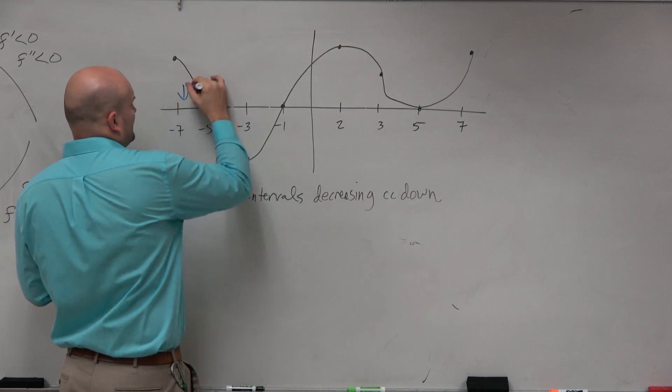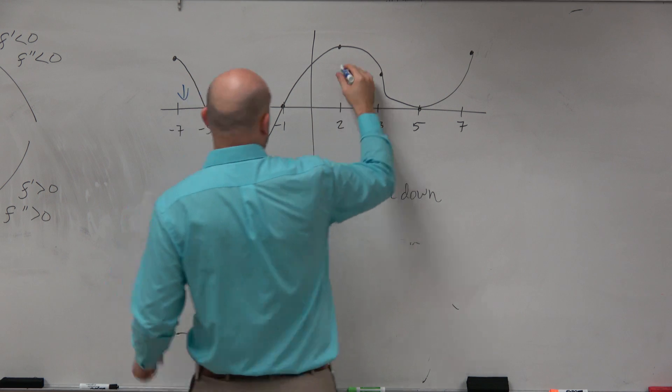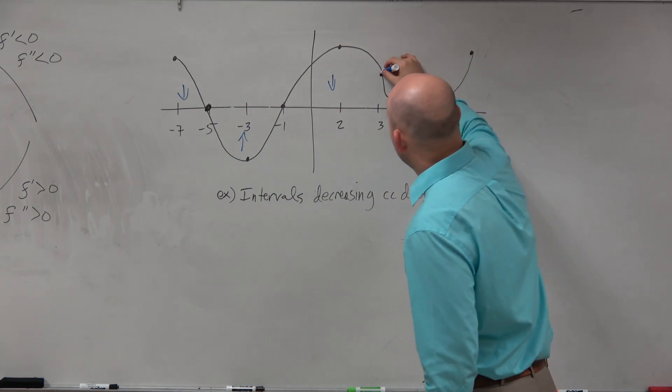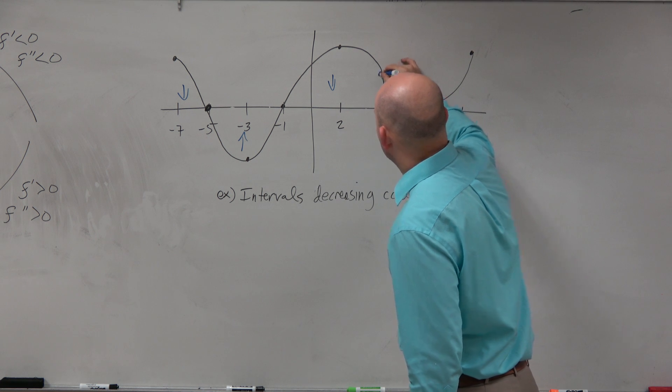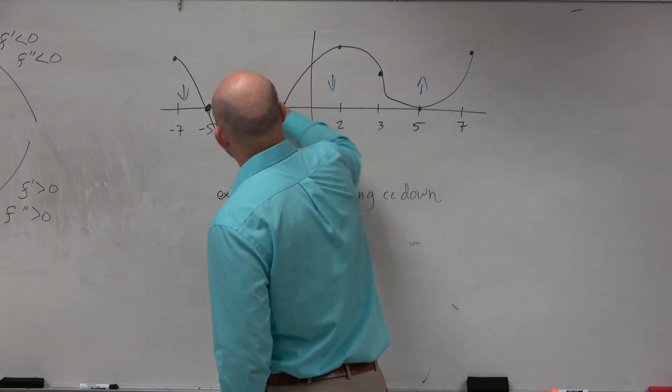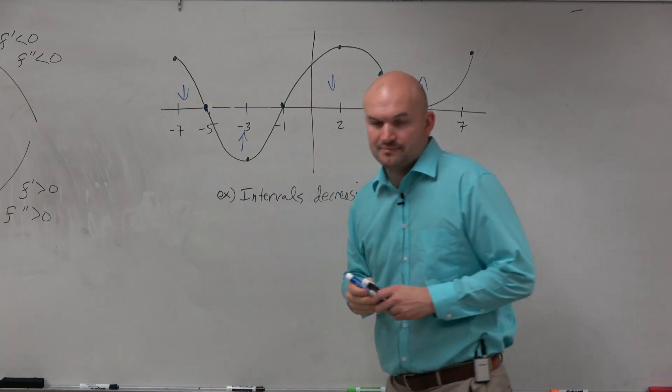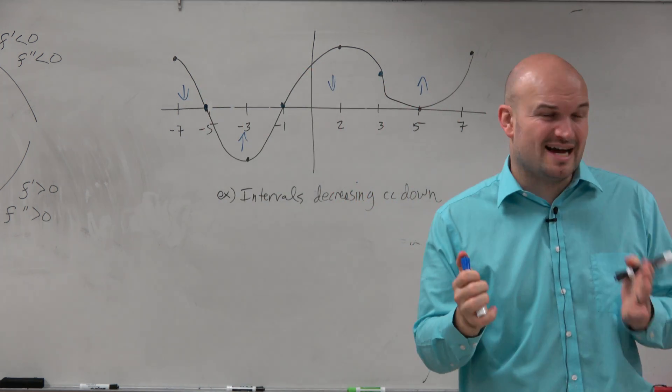But let's just kind of look at when is concavity changing. So here it's concave down. Here it's concave up. Concave down. Concave up, right? And at these points, I'll kind of make them blue, we can call those the inflection points. Those are the points of inflection, where it's concavity is changing.